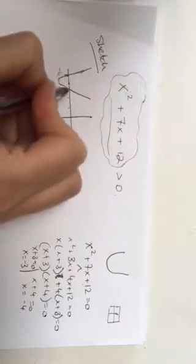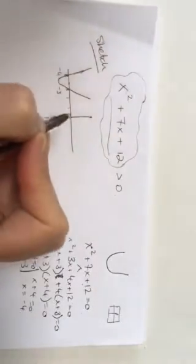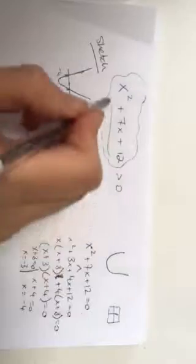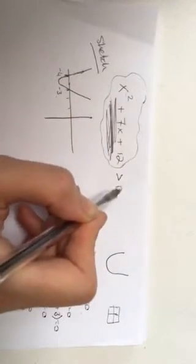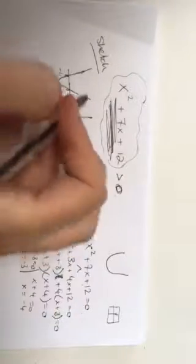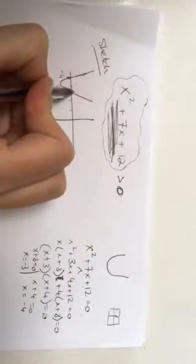Minus 4 there and minus 3 there. And then where is my graph greater than 0? Well all that means is where is it above 0.